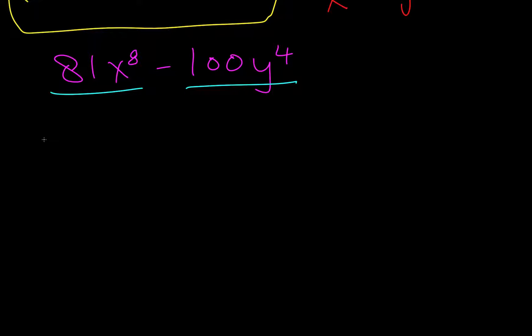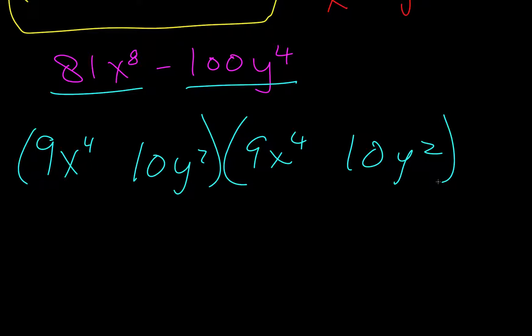If we square root 81, we get 9. If we square root x to the 8, we get x to the 4. And then if we square root 100, we get 10. Square root y to the 4th, we get y squared. We write that 2 times, and then we put a plus sign and a minus sign.